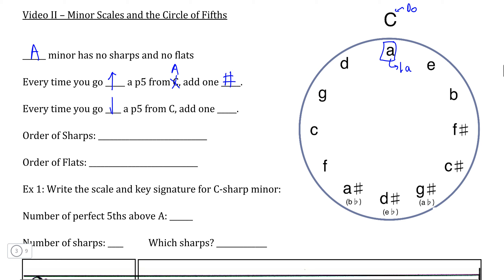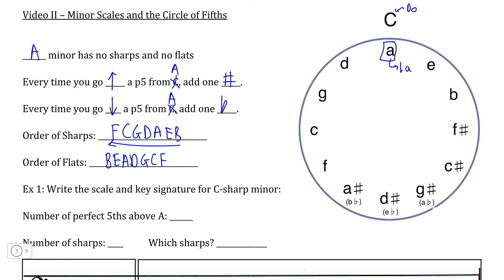And likewise, every time we go down a perfect fifth — again, instead of from C major, this time from A minor — we would add one flat instead. And as long as we remember the order of sharps — Father Charles Goes Down And Ends Battle — and if we reverse the order to find the order of flats — Battle Ends And Down Goes Charles' Father — now we have all the information we need to use the circle of fifths to directly determine the key signature and pitch composition of a minor scale.